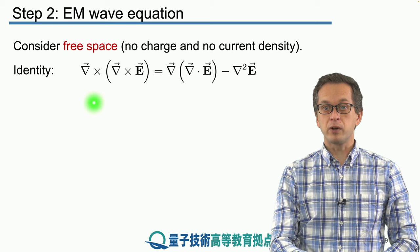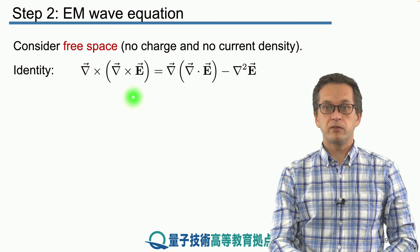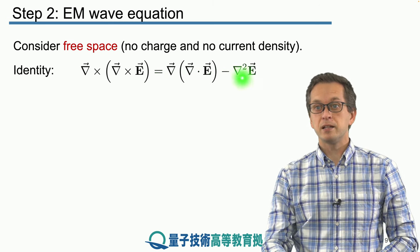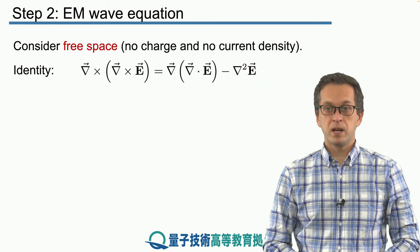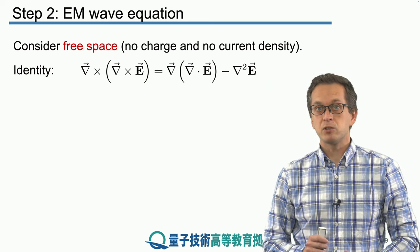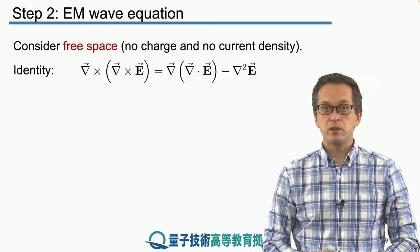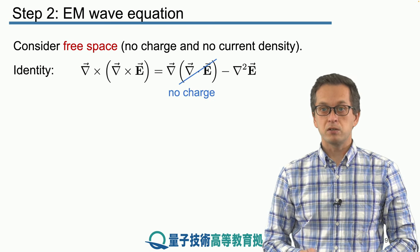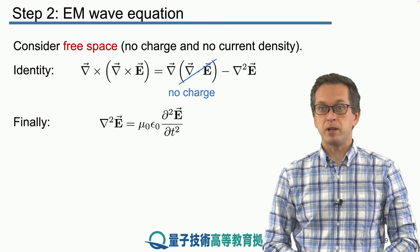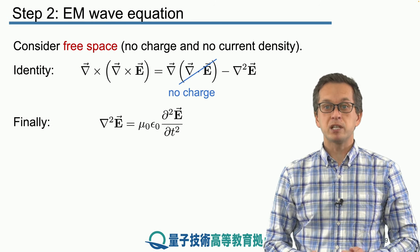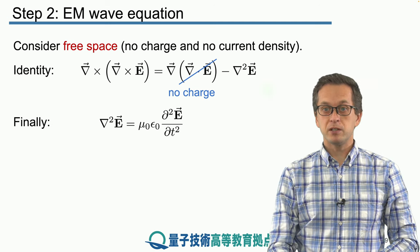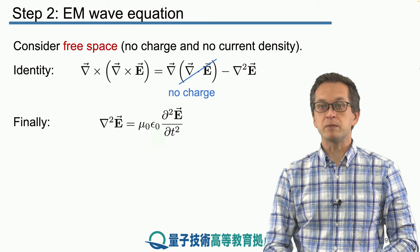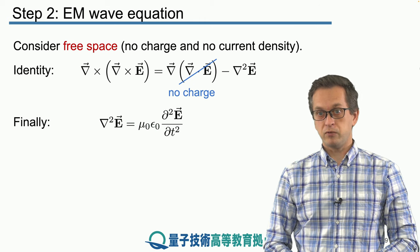The useful vector identity states that the curl of the curl of a vector field — in this case the electric field — is equal to the gradient of the divergence of the vector field minus the Laplacian applied to the electric field. But since we are in free space, just as the current density j is zero, so is the divergence of the electric field. So the first term vanishes and we are left with minus the Laplacian applied to the electric field.